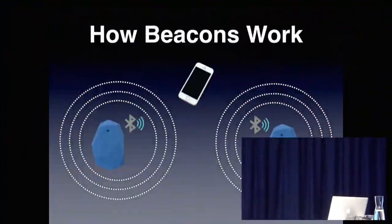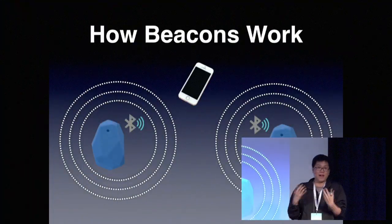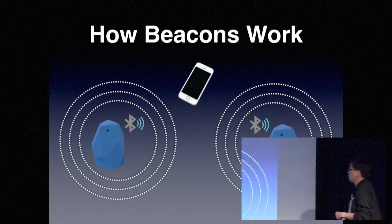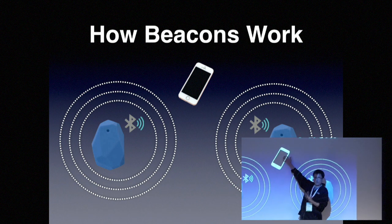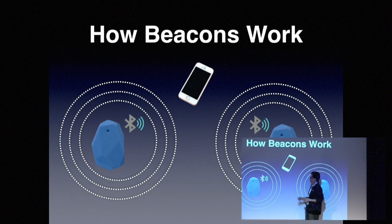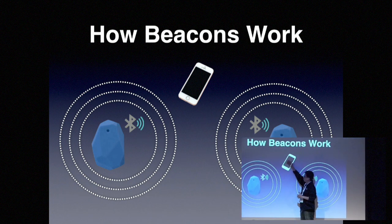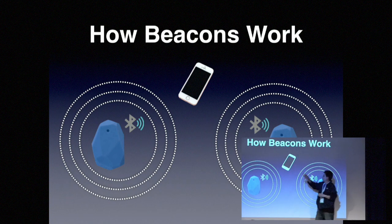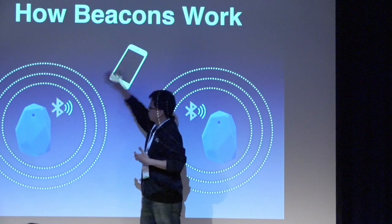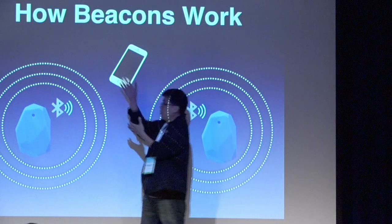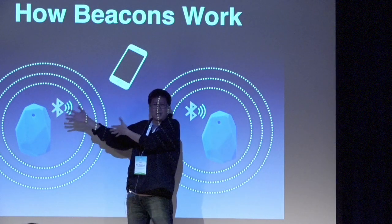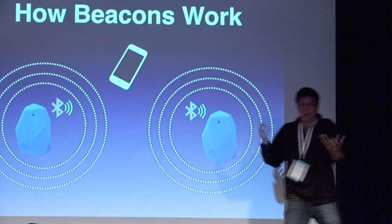So this is how beacons work. Beacons work by transmitting Bluetooth Low Energy packets continuously. As a developer, you write your app — it works on Android as well as iOS — and you detect the signals emitted by each beacon. As you get near a beacon, you receive the signal and know that you are at a particular location. Really, really simple.